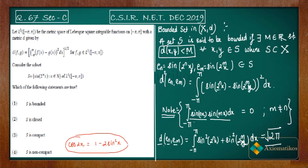The distance between any two elements of S is always √(2π), regardless of which n and m you choose. By the definition of a bounded set, if D(x, y) < M for all x, y ∈ S, the set is bounded. Since the distance equals a fixed constant √(2π), we can take M larger than this, and the set S is indeed bounded. So the first option is correct.